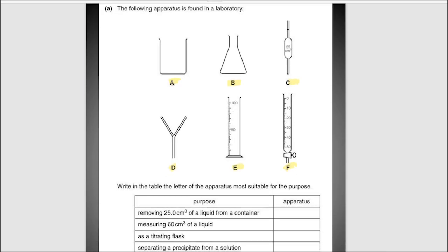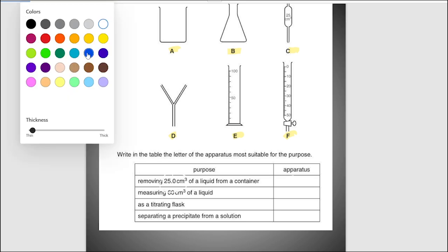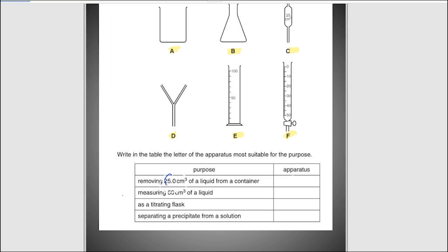This one is the beaker, conical flask, pipette, filtering funnel, measuring cylinder, and burette. Here you can clearly tell which apparatus will use for which purpose. For removing 25.0 centimeter cube of liquid from a container, which apparatus can we use? For this we can use wherever you will need the word 25.0. For that we will have a specific, this one is a 25.0 centimeter cube.